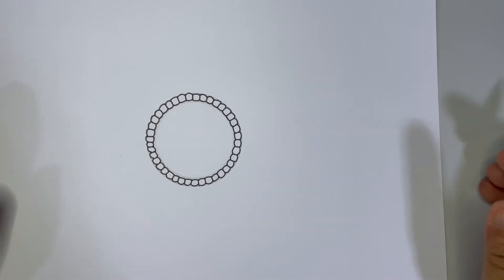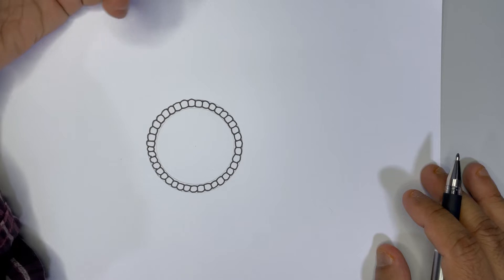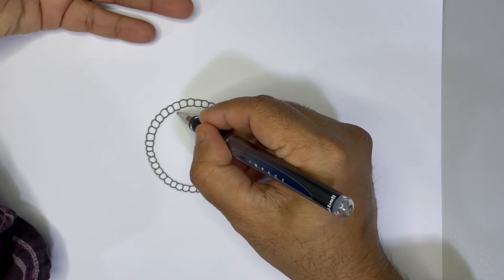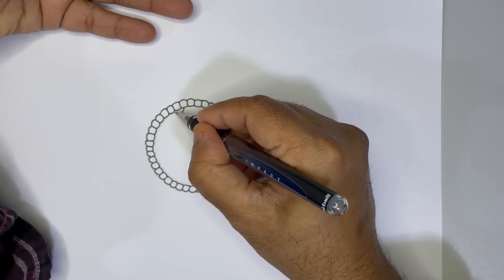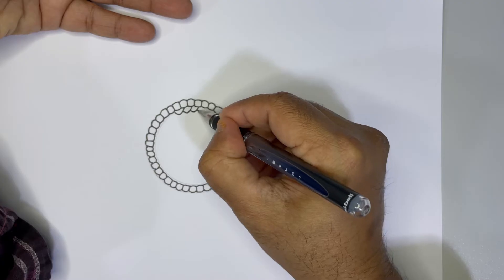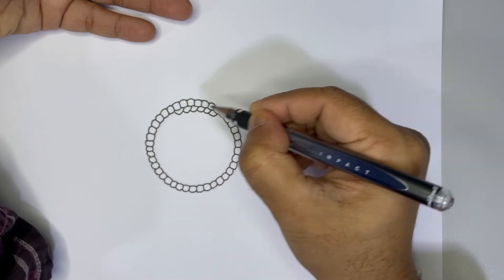All right guys, once this is done what is next? We're supposed to draw the inner cell mass. This is the trophoblast cells. So how to draw the inner cell mass? Just draw honeycomb-like structures hanging like this inner side.